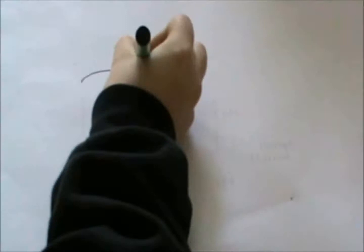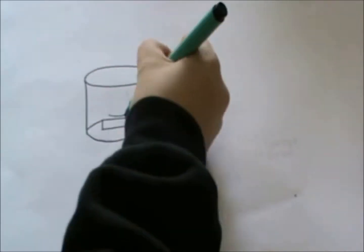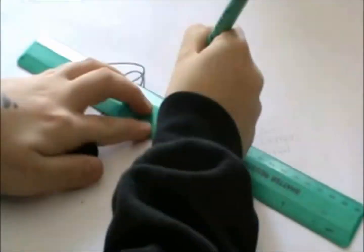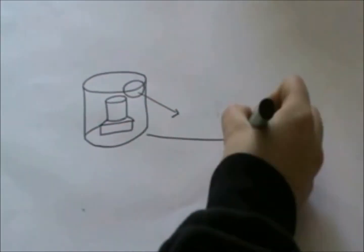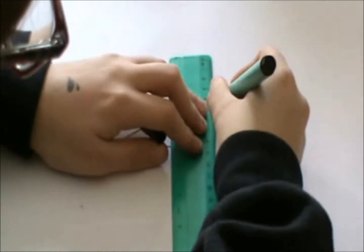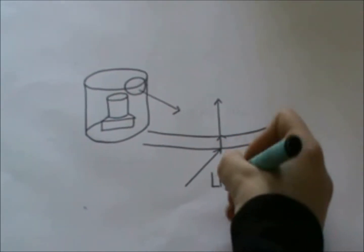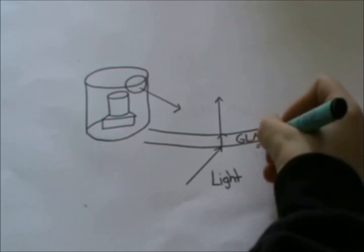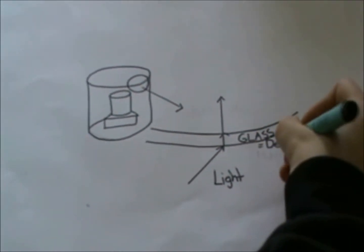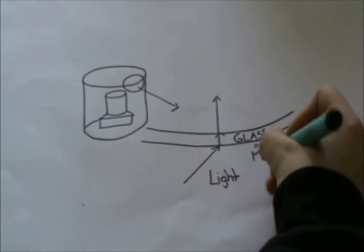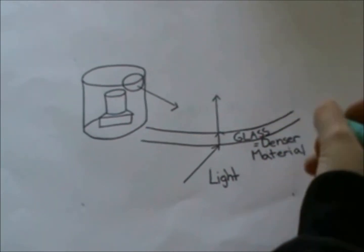Let's go back to our test tube. Normally, light would be refracted as it transmits through the glass, because the glass is denser than the air. Then it would refract back to its original angle when it transmits through the air, because the air is less dense than the glass. This allows you to see the boundary between the glass and the air.